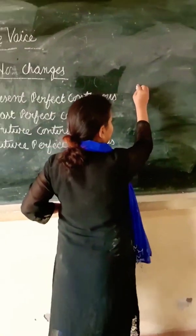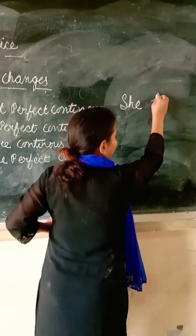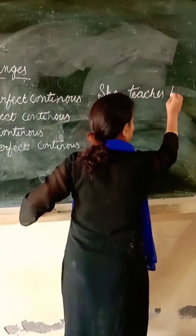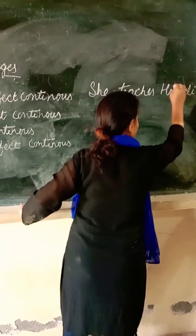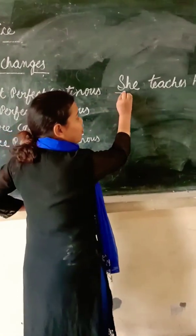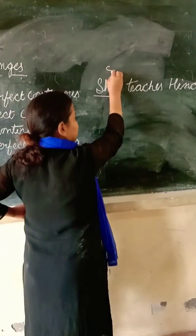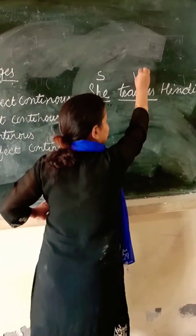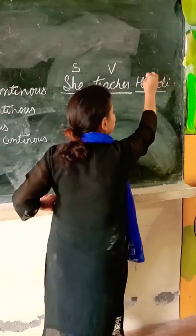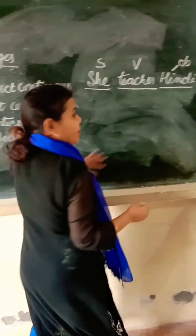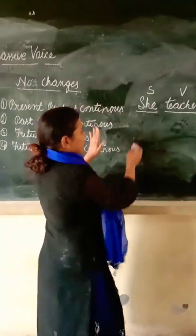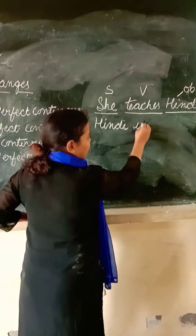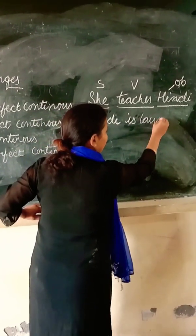For example, we will see: 'She speaks Hindi.' Who speaks Hindi? She — so she is the subject. What does she do? Speak — so speak is the verb. And what does she speak? Hindi — so Hindi is the object. Now we will swap subject to object and object to subject. Object is Hindi. Hindi — the verb in third form is 'taught.'